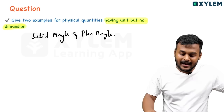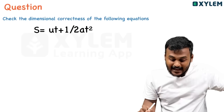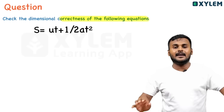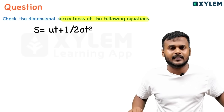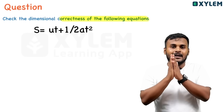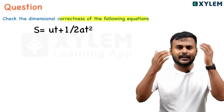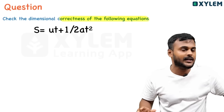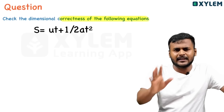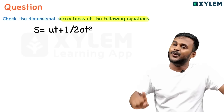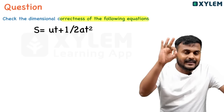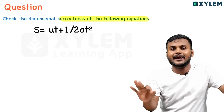Check the dimensional correctness of the following equations. We use the principle of homogeneity. I will not add velocity and temperature because they have different dimensions. According to the principle of homogeneity, an equation is dimensionally correct only if all terms have the same dimensions.